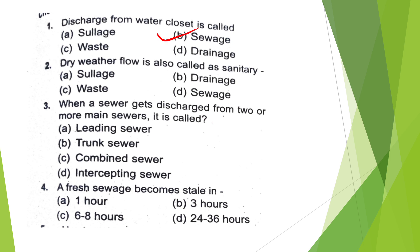Question: Dry weather flow is also called as sanitary dash. Options: Sanitary, Sewage, Drainage, Waste, Sewage. The answer is option D — Sanitary Sewage.